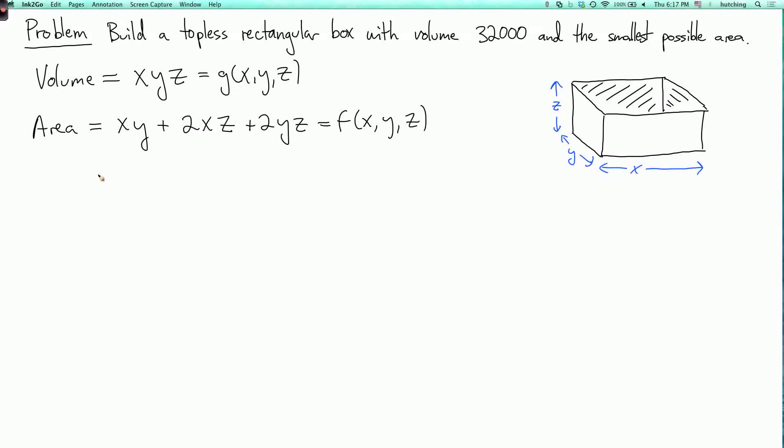So we need to solve the equations. Gradient of f equals lambda times the gradient of g, and g equals 32,000. Also, for our answer to make sense in the context of the question, we're going to require that x, y, and z are greater than 0. So let's first work out what this equation, gradient of f equals lambda times gradient of g, tells us. And since it's a little bit messy, let me do that on a new page.